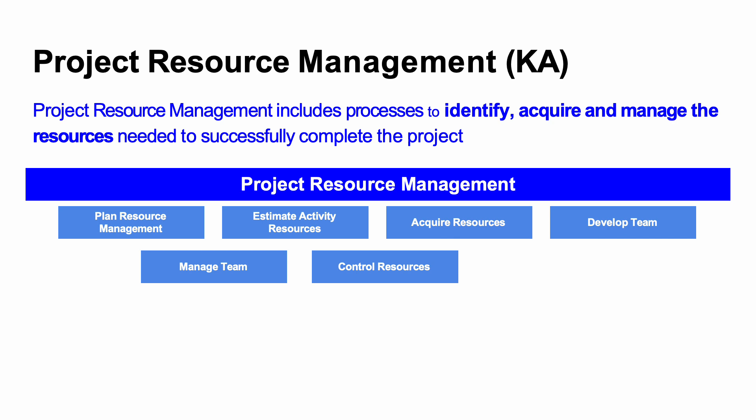Project resource management is comprised of six processes: plan resource management, estimate activity resources, acquire resources, develop the team, manage the team, and control resources.